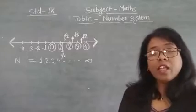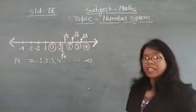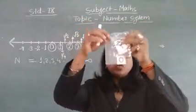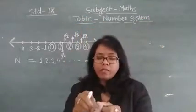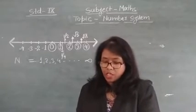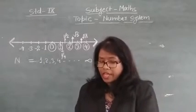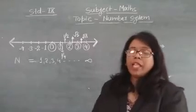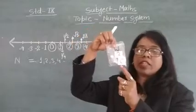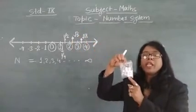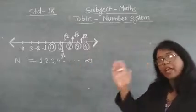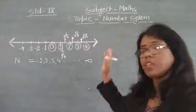William asks how that is so. The host explains that natural numbers along with 0 — when you put the natural numbers in the pocket of 0 — you get the complete whole numbers. Natural numbers along with 0 are the complete whole numbers.